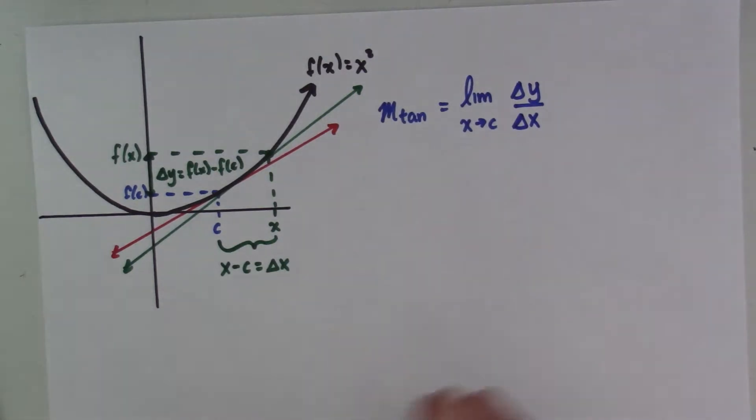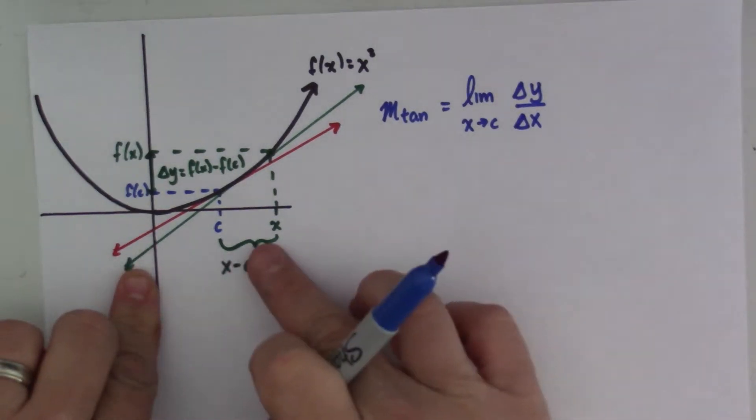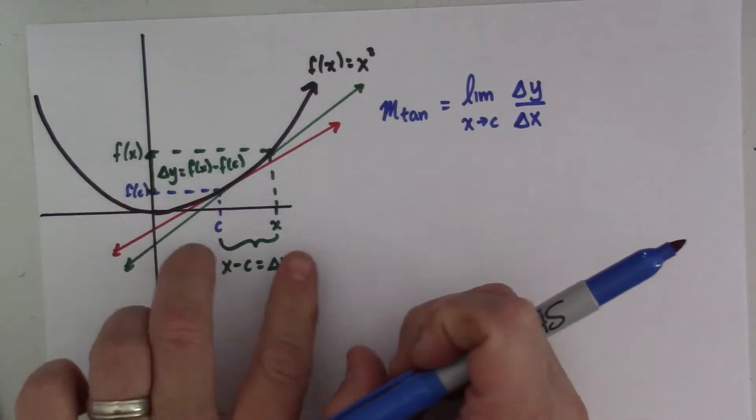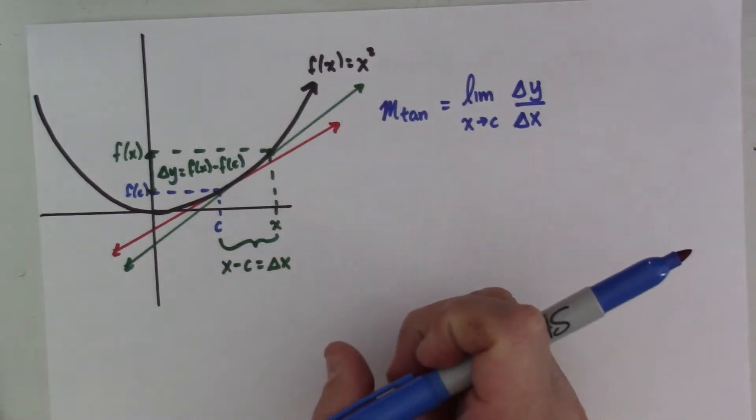So, just to recap, we're looking at this change in y over this change of x, and we are taking the limit as delta x goes to 0.